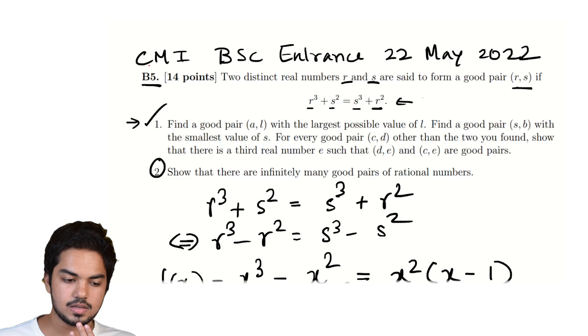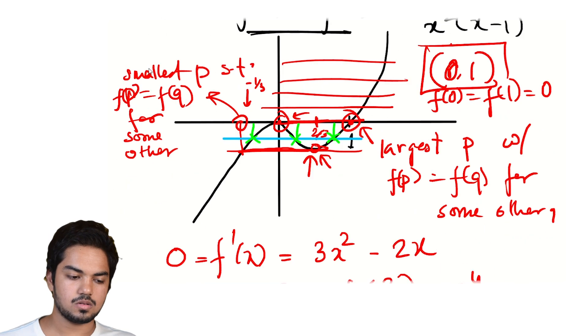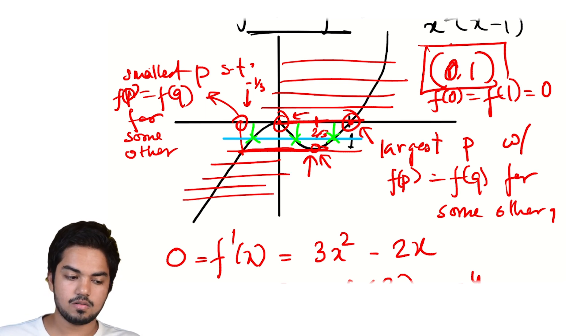And these three intersections correspond to three good pairs for every such value, which is exactly what the question was asking us for. For every good pair (c, d) other than the two we found, there is a third real number e such that (d, a) and (c, a) are good pairs.